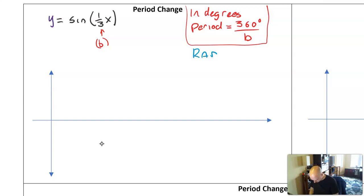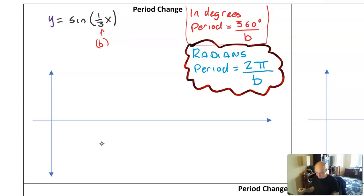Radians are way better. So in radians, to find the period, one full trip around the circle was 2 pi radians. So to find the period, we're going to do 2 pi divided by b. So that's how you find the new period.